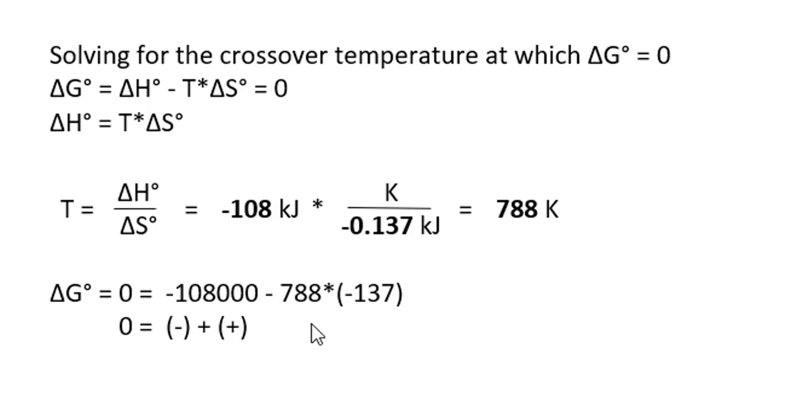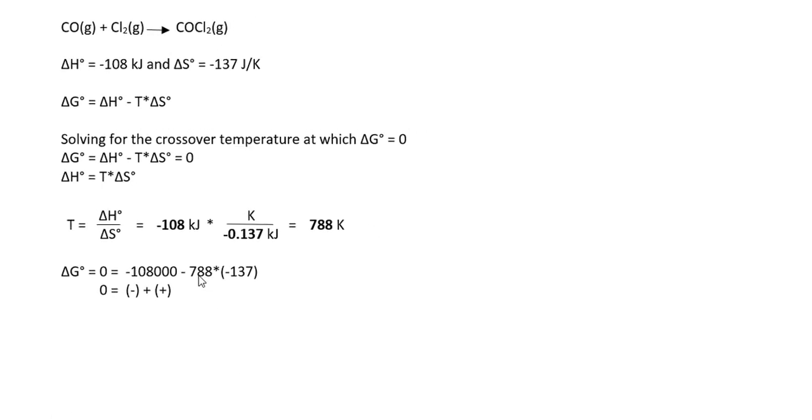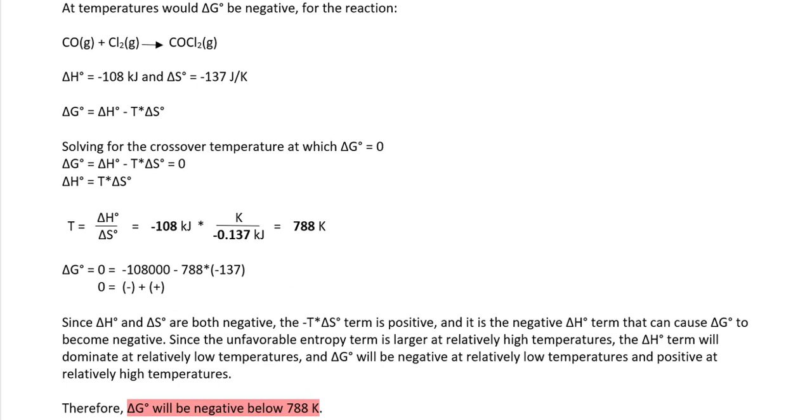The only way to get that to decrease is if the temperature decreases. Therefore, we can conclude that ΔG will be negative for temperatures below 788.